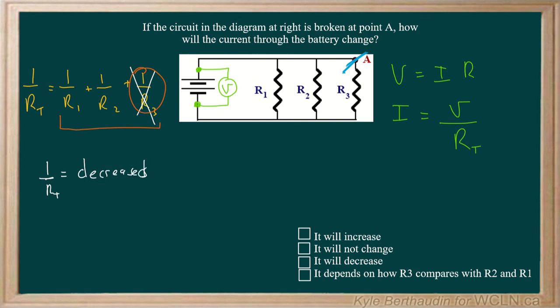Because we aren't adding this 1 over R3. But if we solve for RT, then we have to put the 1 over the decreased number, which is just a smaller number in the denominator. And if this number is smaller, then what that means is RT is actually going to increase. If we have a smaller number in the denominator, it means that RT is going to increase.